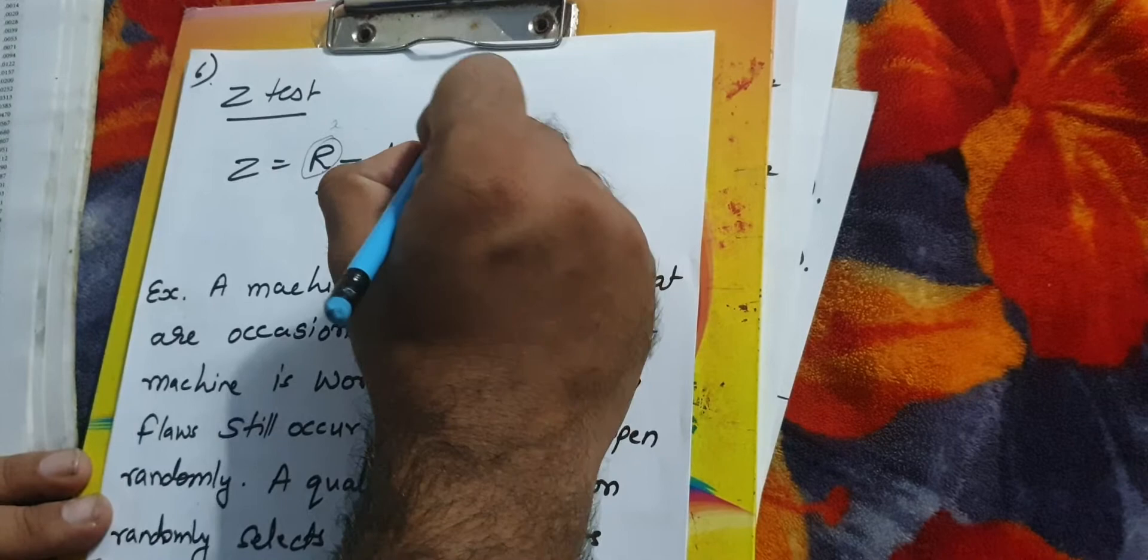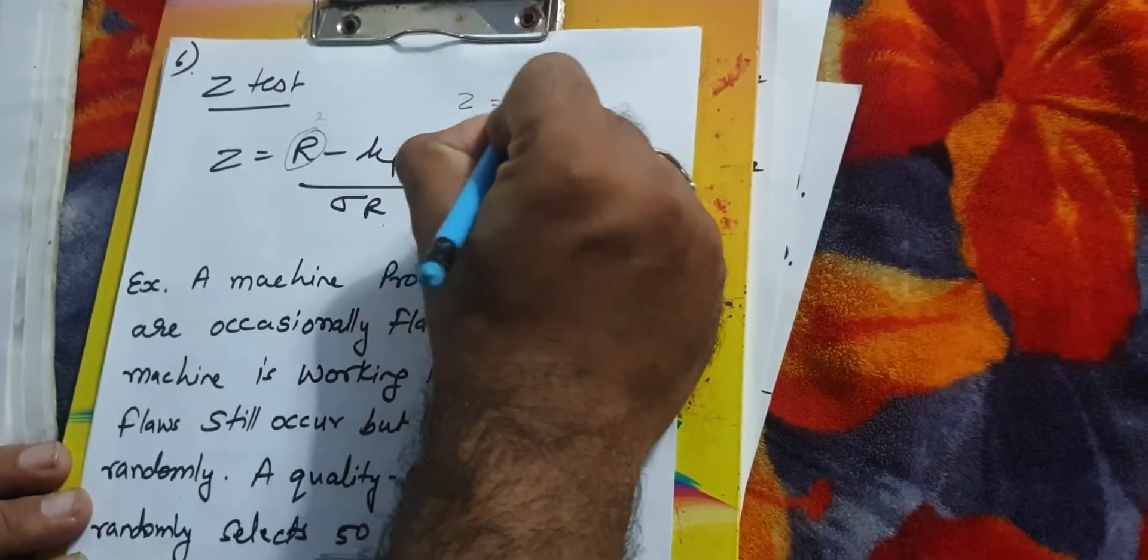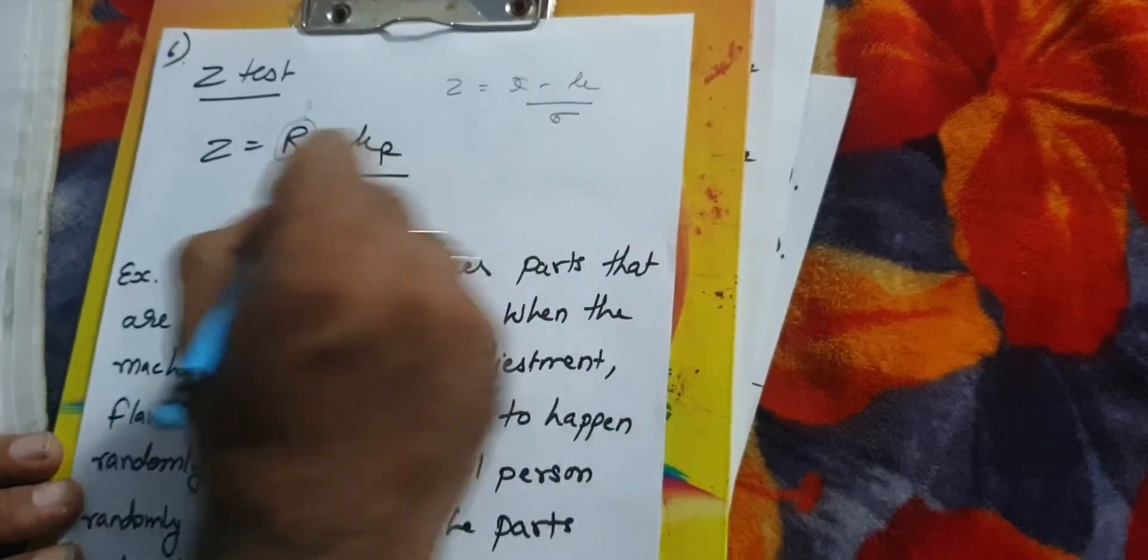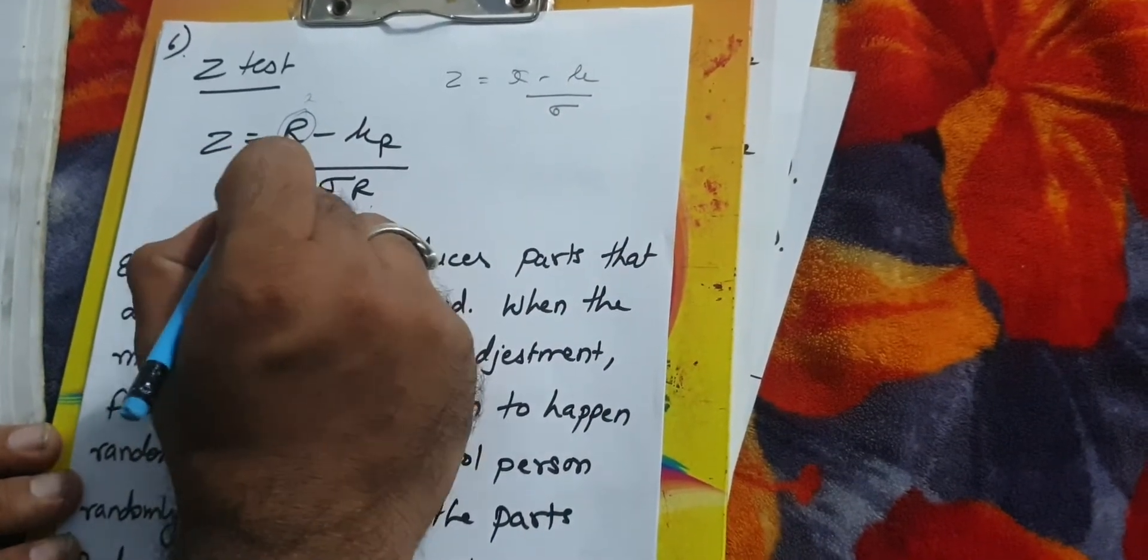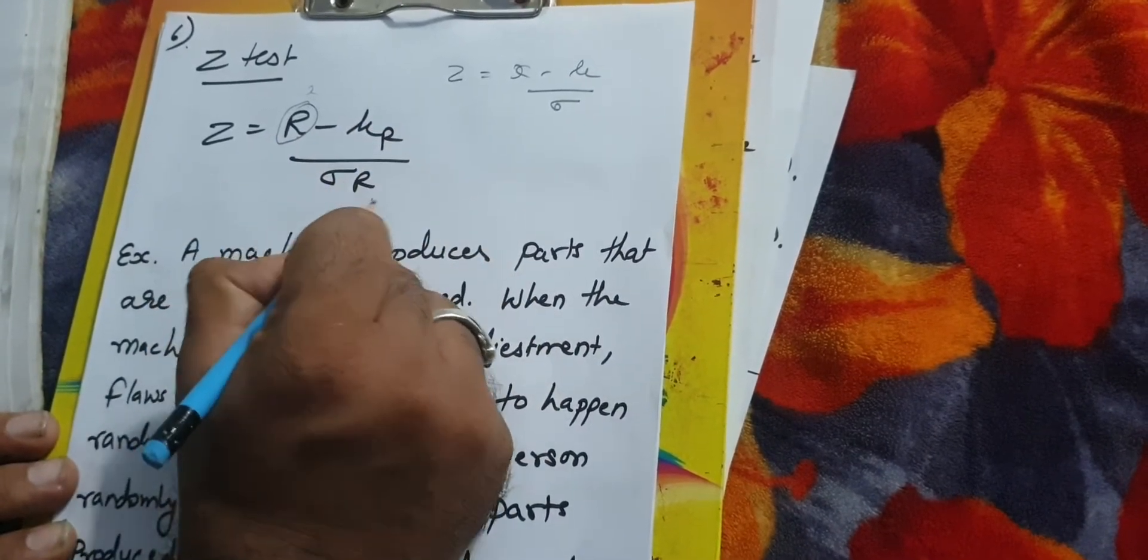Now we will move to Z test. Our Z formula is x minus mu upon standard deviation. We have converted this for runs test that makes R minus mu of R upon standard deviation of R.